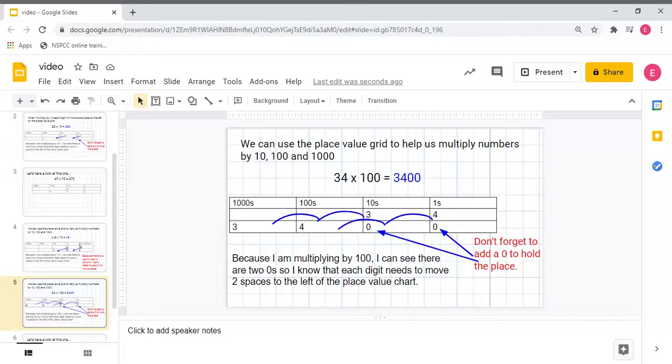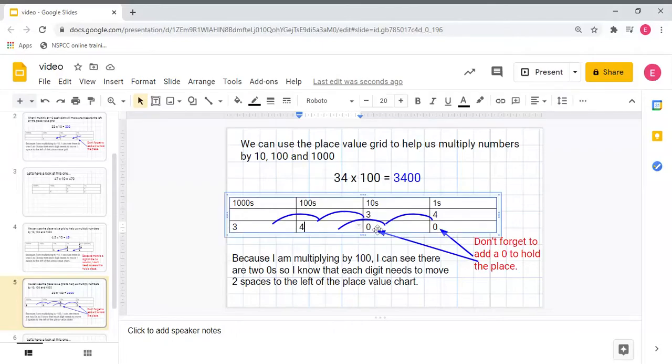I've got four ones in 34, so that's going to jump two places into my hundreds column. Then I need to remember to make sure that I put in the zeros to hold my places of my tens and my ones.